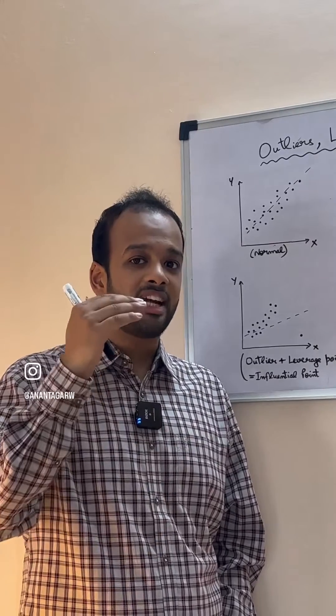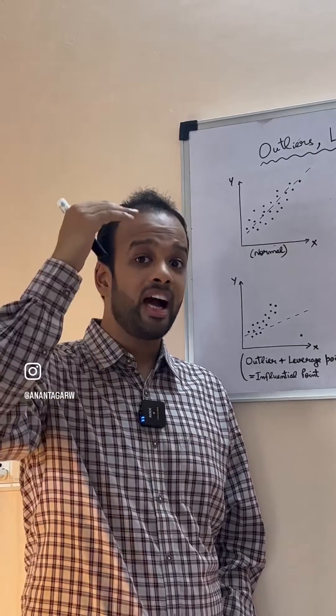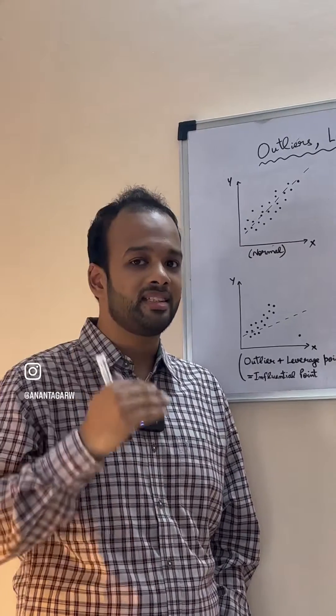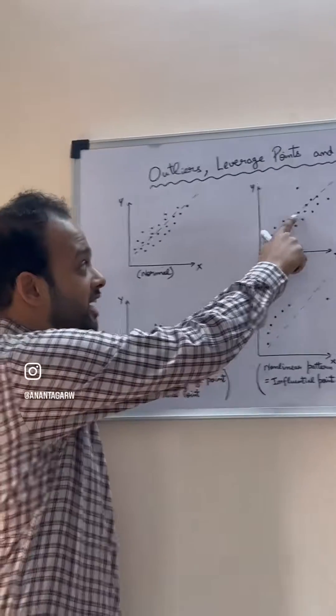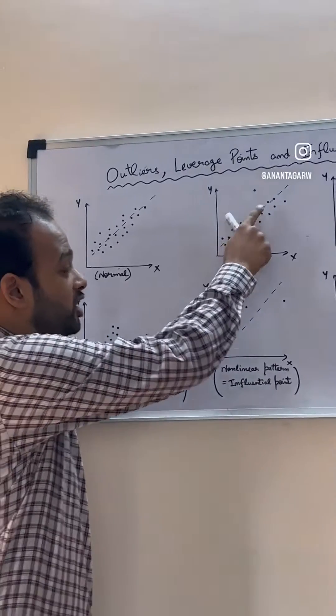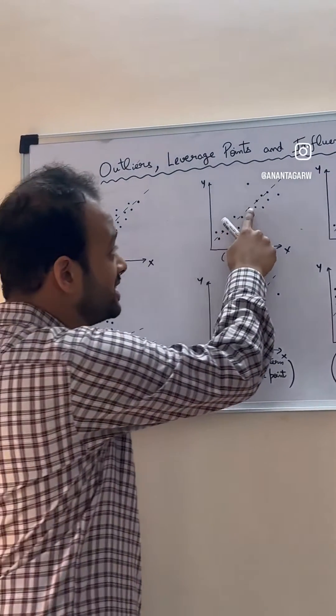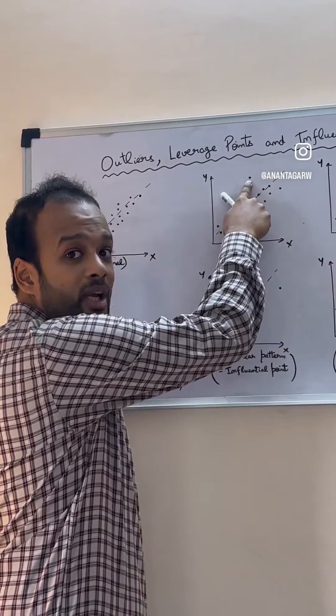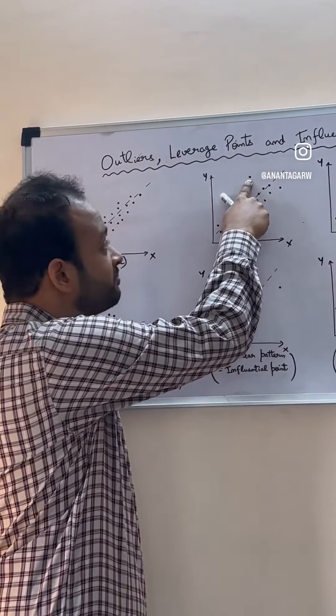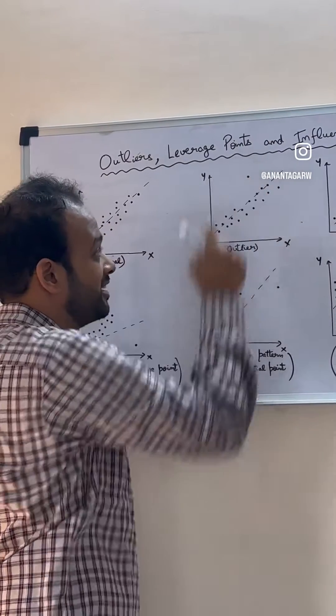Now, if a point is standing very high on the y-axis, far away from the regression line, it's an outlier. So you can see in this case, this point is an outlier because it has a very high residual.